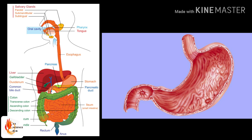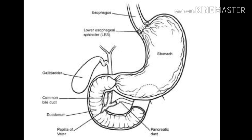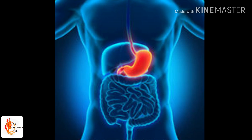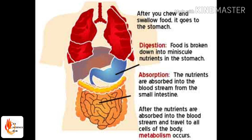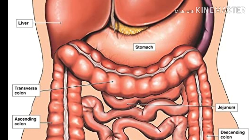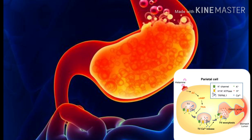Due to peristaltic movement, food moves into the stomach. The stomach is a dilated, sac-like organ where food is stored temporarily for more than three hours. Inside the stomach, mechanical digestion also takes place due to the peristaltic activity of muscles in the stomach wall. This activity breaks down and mixes the bolus well into a liquid called chyme.